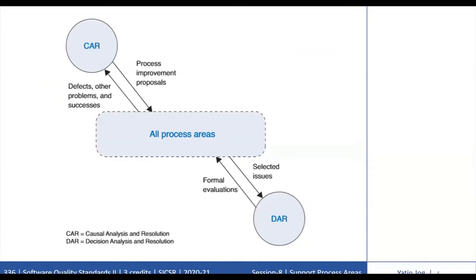The advanced support process areas provide projects and organizations with an improved support capability. Each of these process areas relies on specific inputs or practices from other process areas. This diagram provides a view of the interactions among the advanced support process areas and all other process areas.